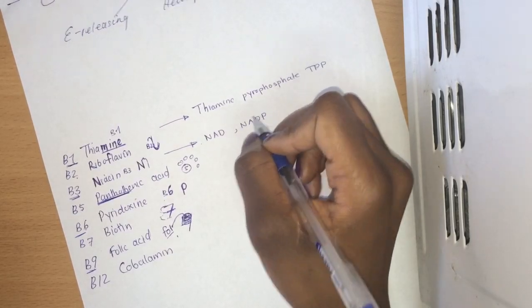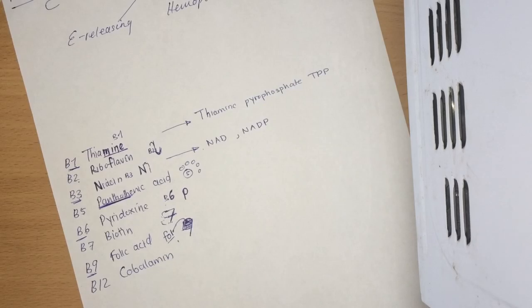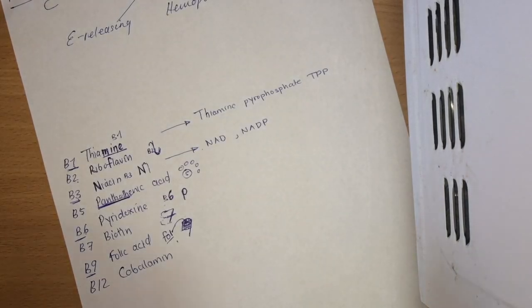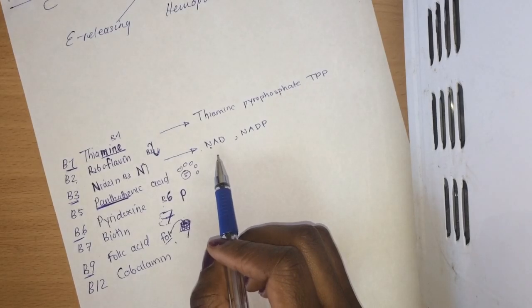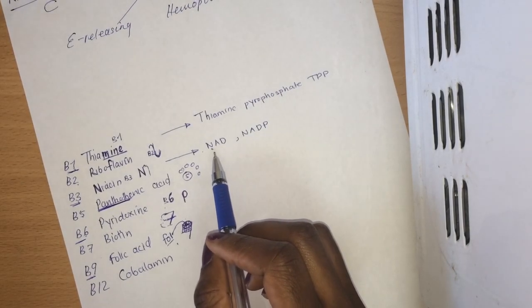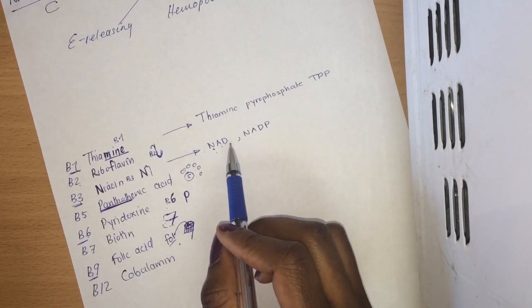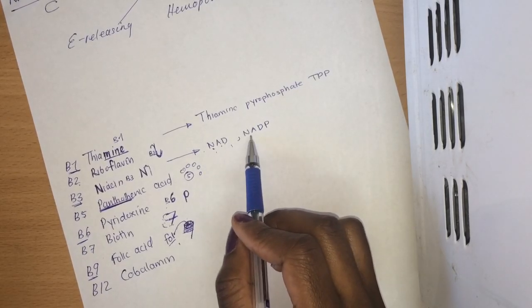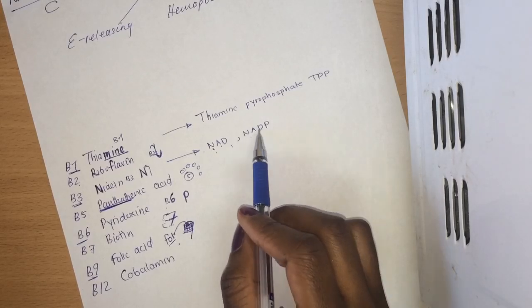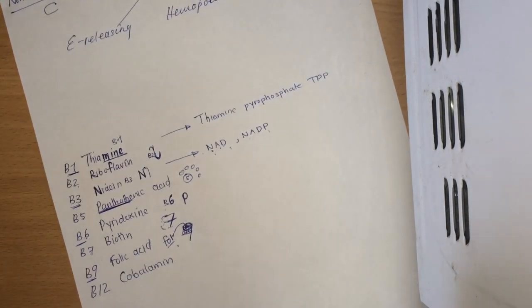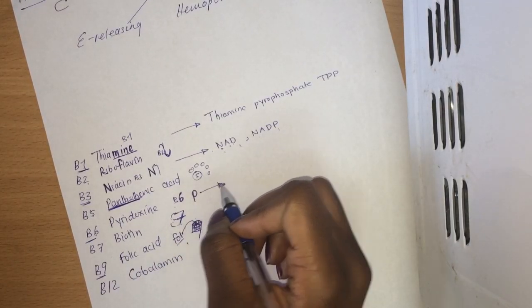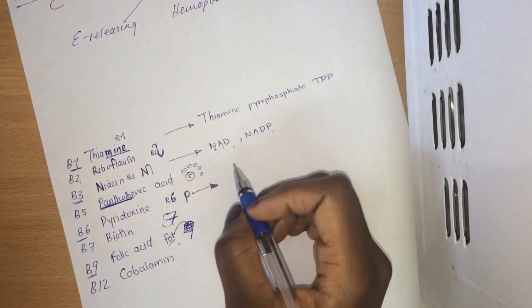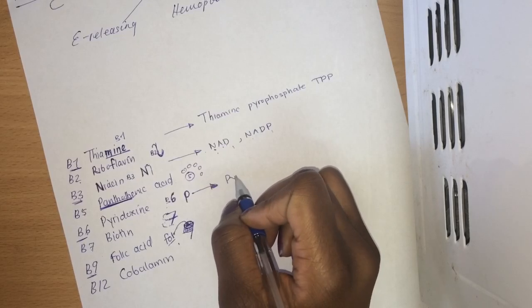For niacin we have NAD and NADP. NAD is a hydrogen carrier which is used in the electron transport chain and other reactions. It stands for nicotinamide adenine dinucleotide and NADP is nicotinamide adenine dinucleotide phosphate.